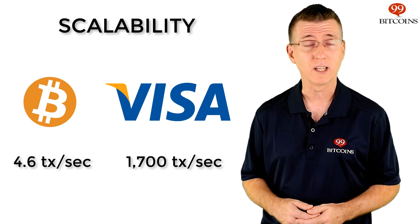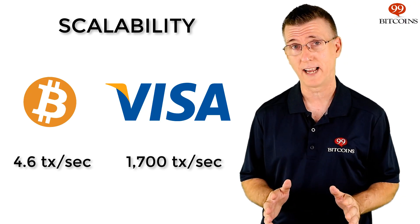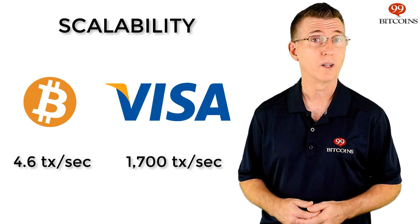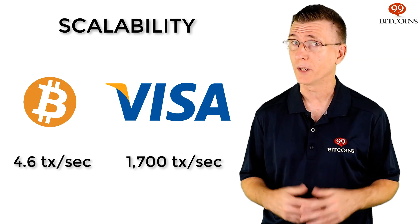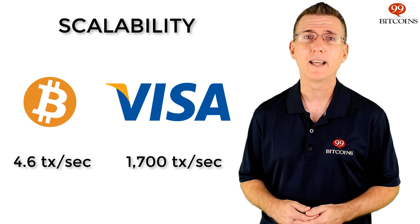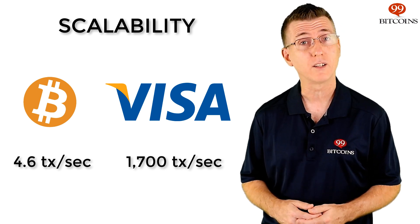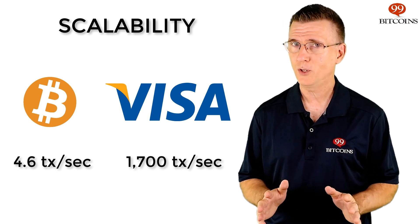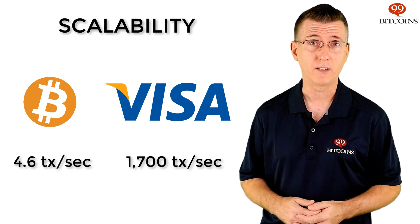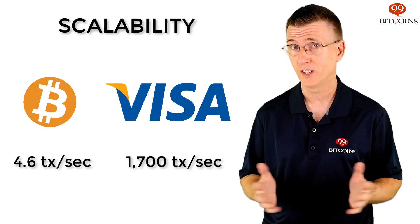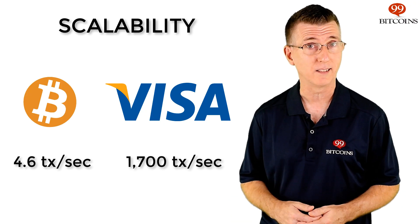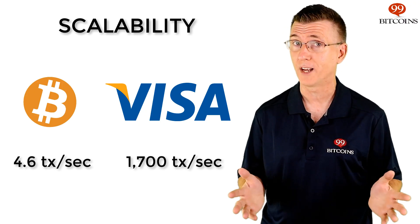Visa, for comparison, can confirm 1,700 transactions per second. This means that when a lot of people want to send Bitcoin during price rallies, transactions get stuck in a very long queue waiting to enter a block and get confirmed. Bitcoin allows you to pay a higher transaction fee if you want to jump the queue, but this might cause fees to reach ridiculous levels as more and more people try to cut the line. This isn't something you want if you're building Bitcoin to become a global payment method.